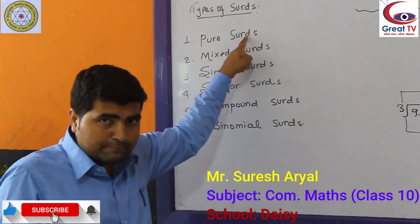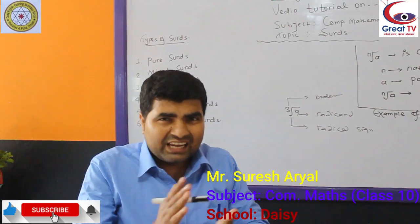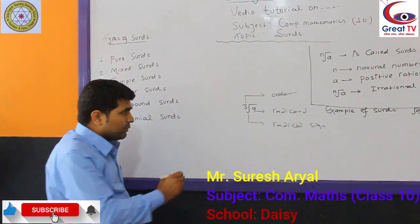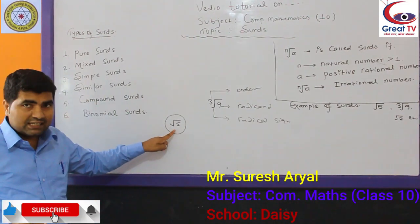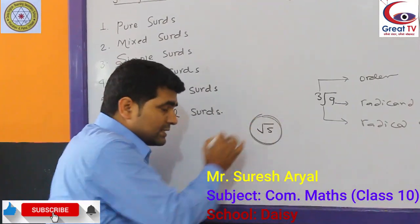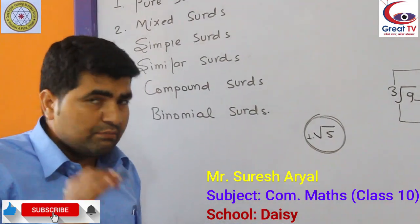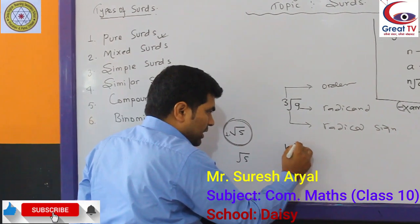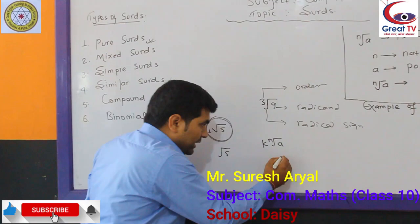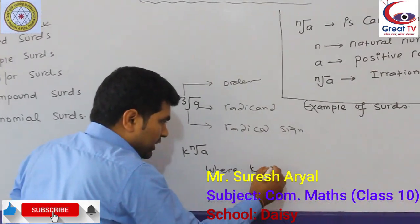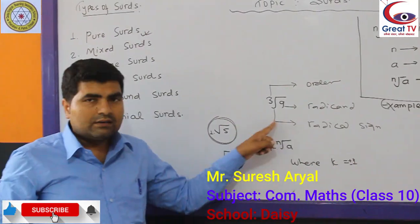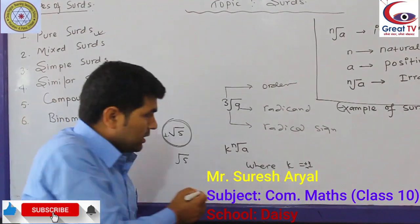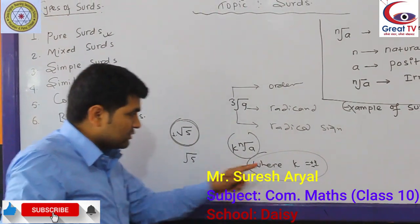First, I am going to discuss about pure surds. A surd having no coefficient except 1 is called a pure surd. For example, root under 5 — the coefficient of this surd is 1, so this is a pure surd. In mathematical form, we define pure surds as k times the nth root under a, where k equals plus or minus 1. If the value of k equals plus or minus 1 and the surd satisfies this condition, that type of surd is called a pure surd.